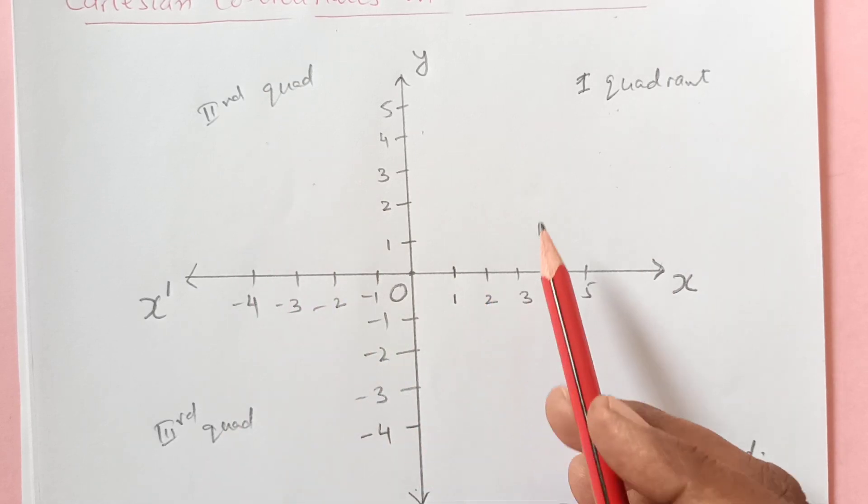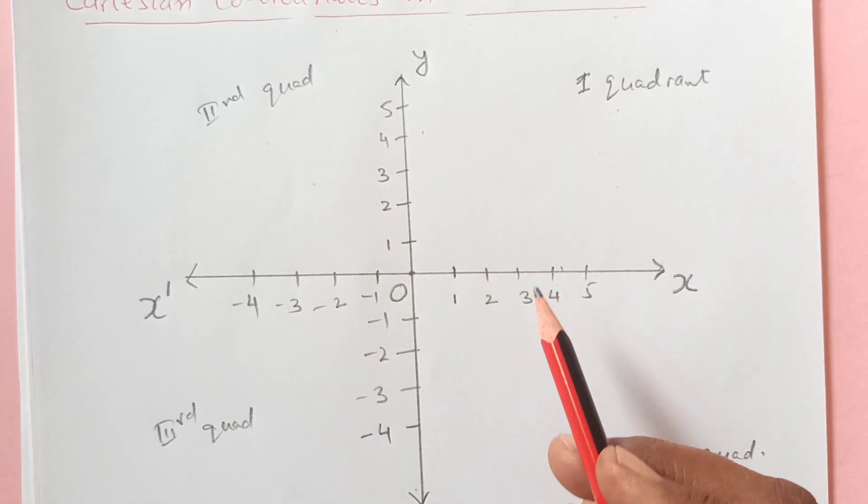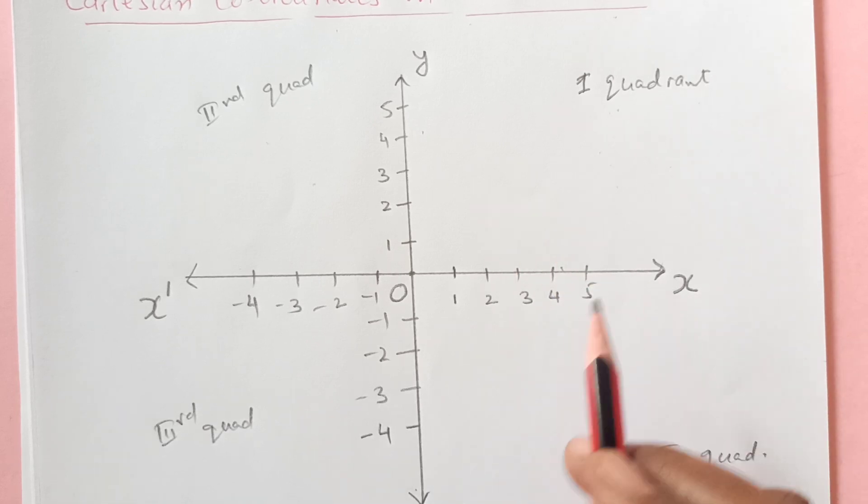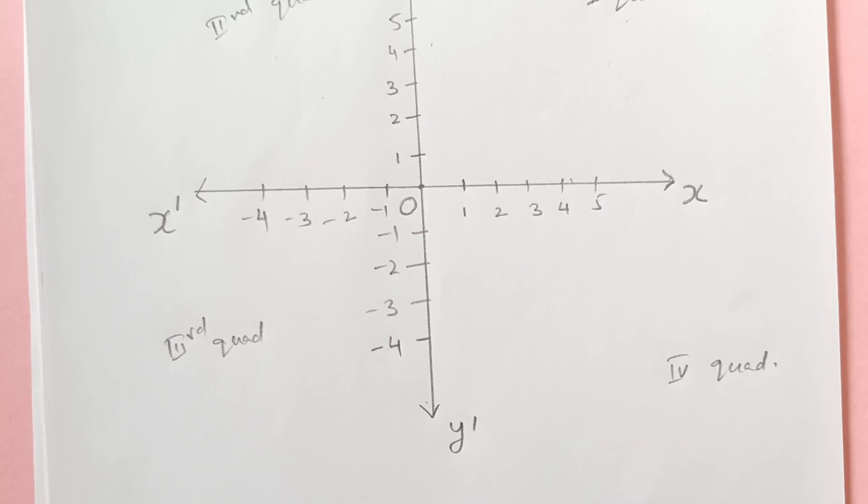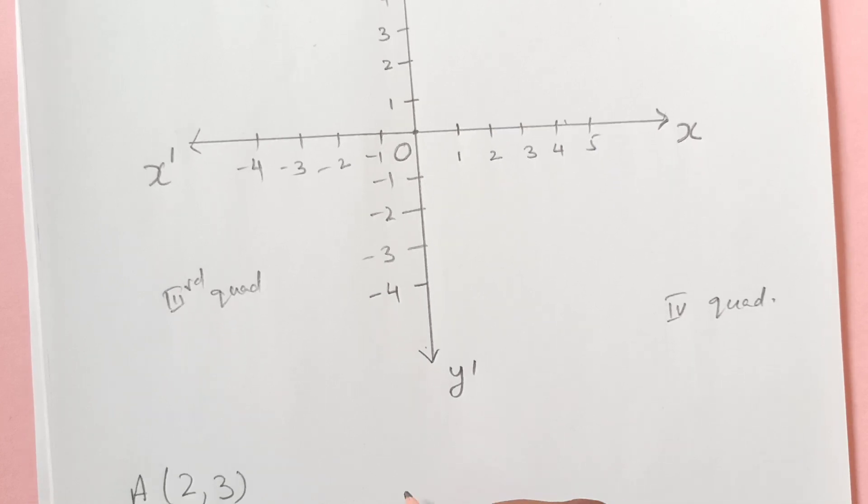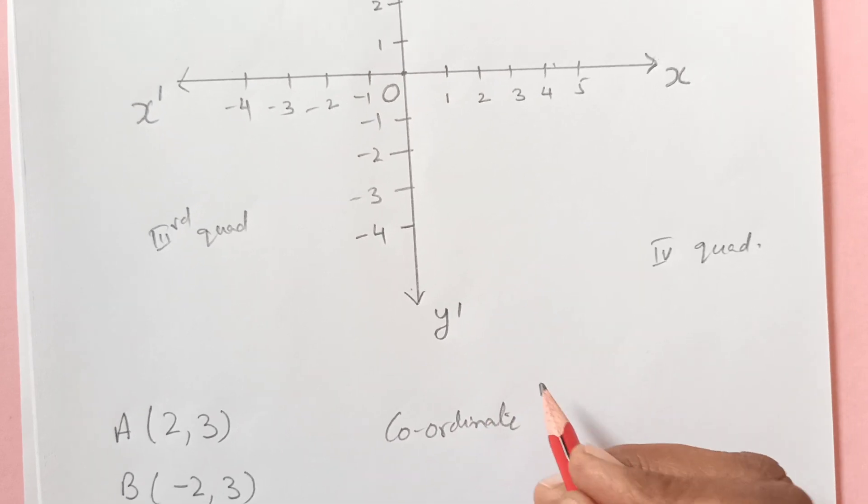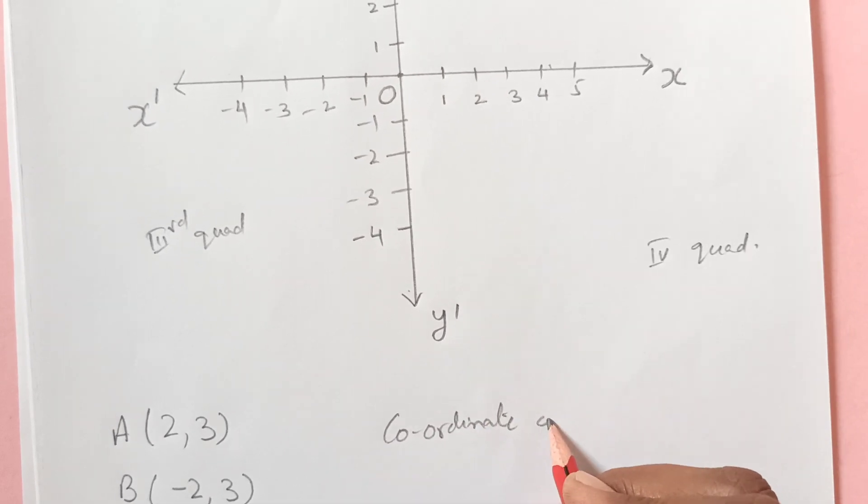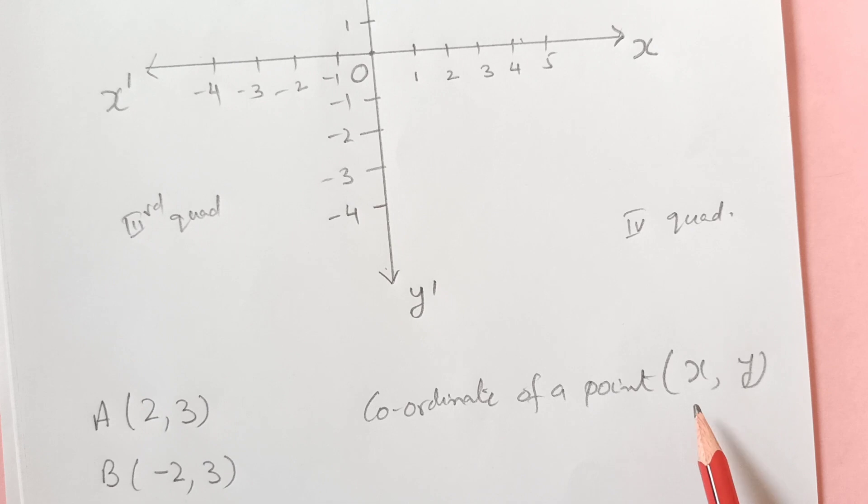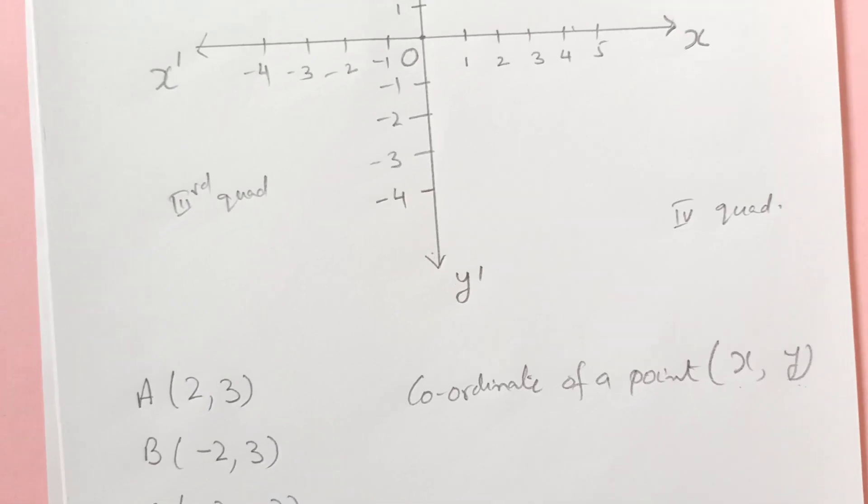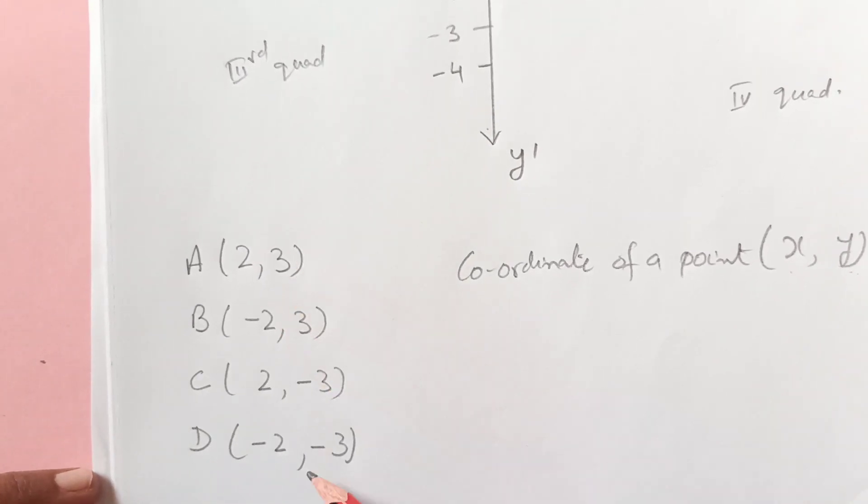Now you need to place the points. Whenever we say coordinate geometry, we always have two values there, x and y. We usually denote the coordinate of any point by x and y. The first one is always x and the second one is y. Now I will show you these points here, how to locate these points on the coordinate axis.